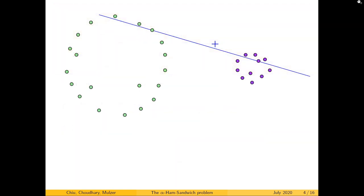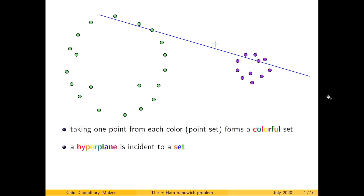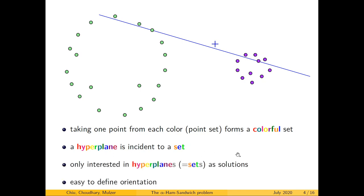This seems like a generalization of the classical ham sandwich theorem but as we will see later, this is not the case. In our example, this line passes through precisely one green point and one violet point. Such a set is called a colorful set — it contains precisely one point from each color — and a colorful hyperplane is one which is incident to a colorful set.